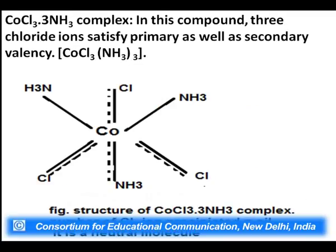In CoCl3·3NH3, the secondary valency of cobalt is 6, and all three chlorides and three NH3 go inside the inner coordination sphere, satisfying all six secondary valencies. These three chloride ions are not precipitated on addition of silver nitrate, are not released on addition of sulfuric acid, and remain inside the coordination sphere. This compound is a neutral molecule — [Co(NH3)3Cl3] — with no counter ions, so no ions are given in solution.